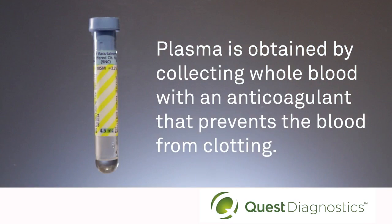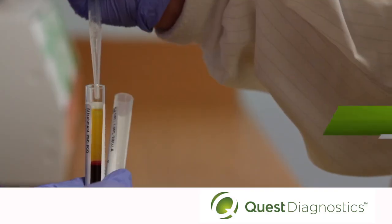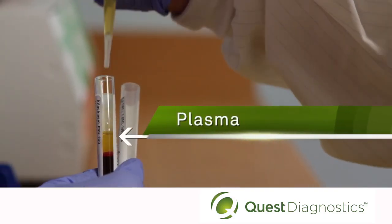Plasma is obtained by collecting whole blood with an anticoagulant that prevents the blood from clotting. The blood is then centrifuged to remove the blood cells. The liquid on the top of the cells is plasma.